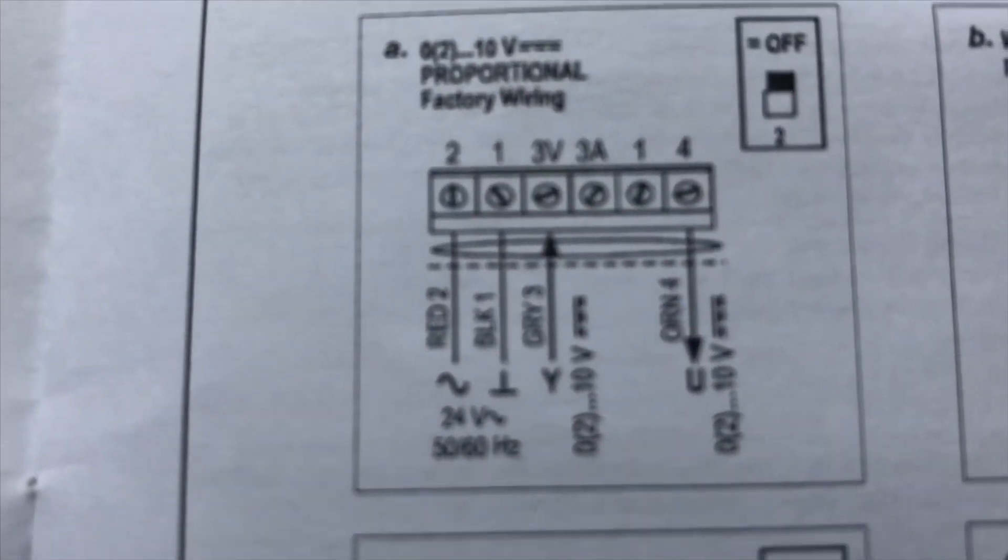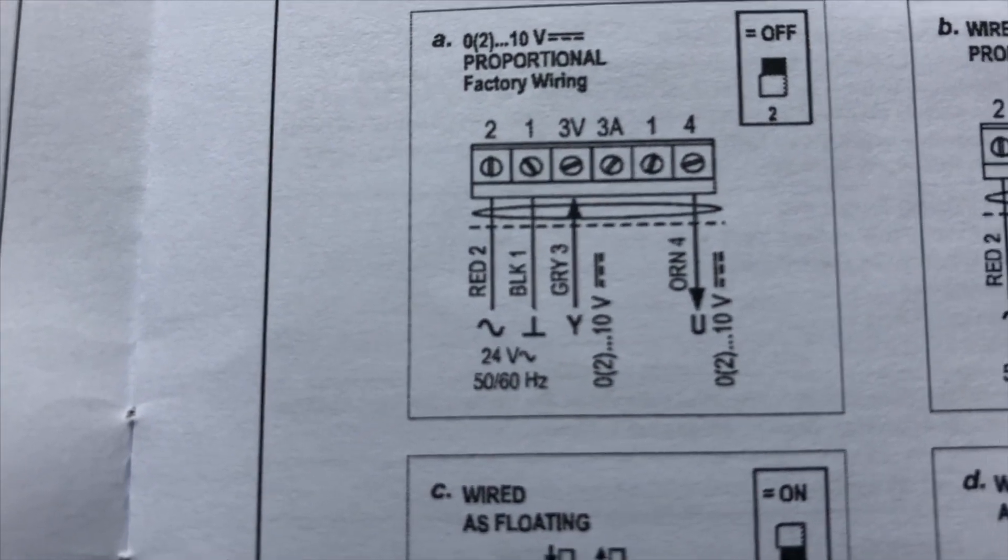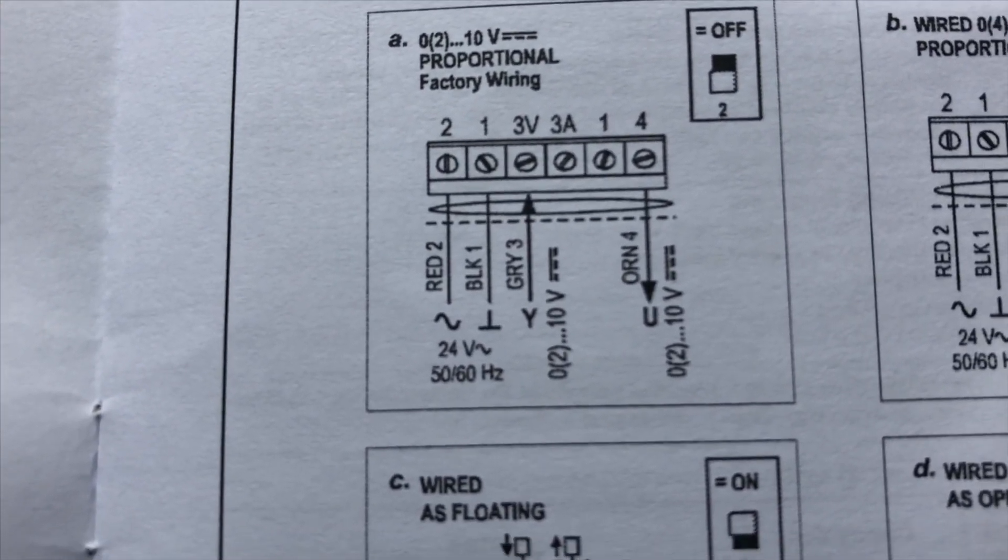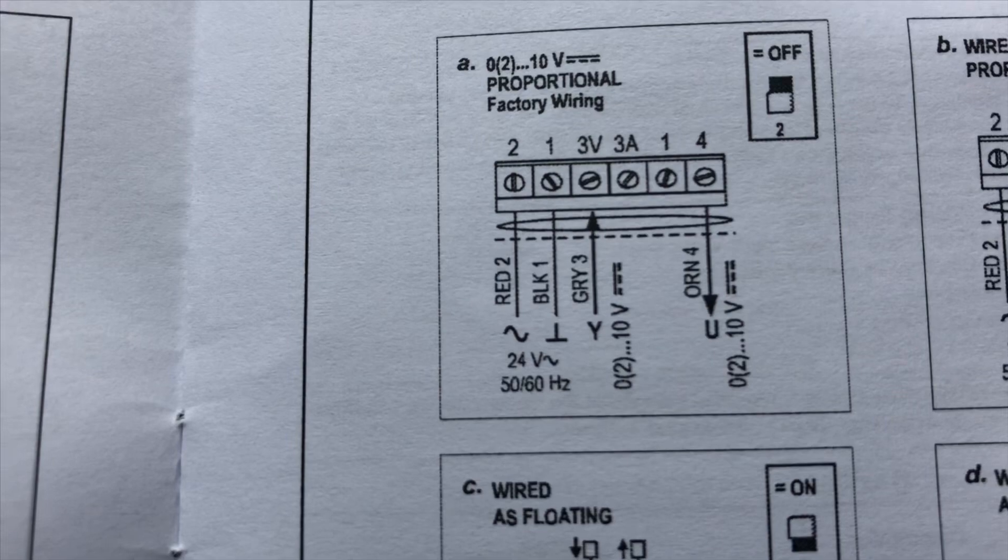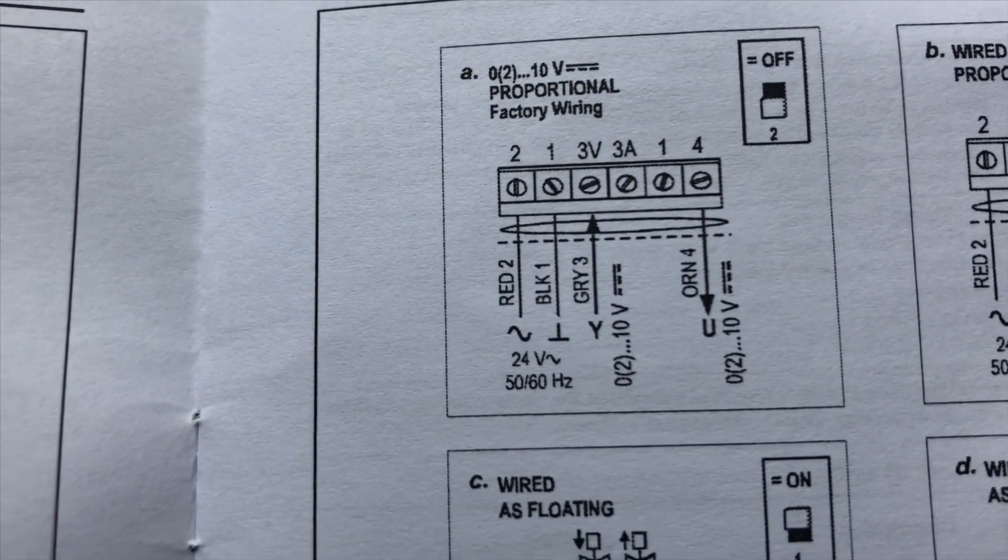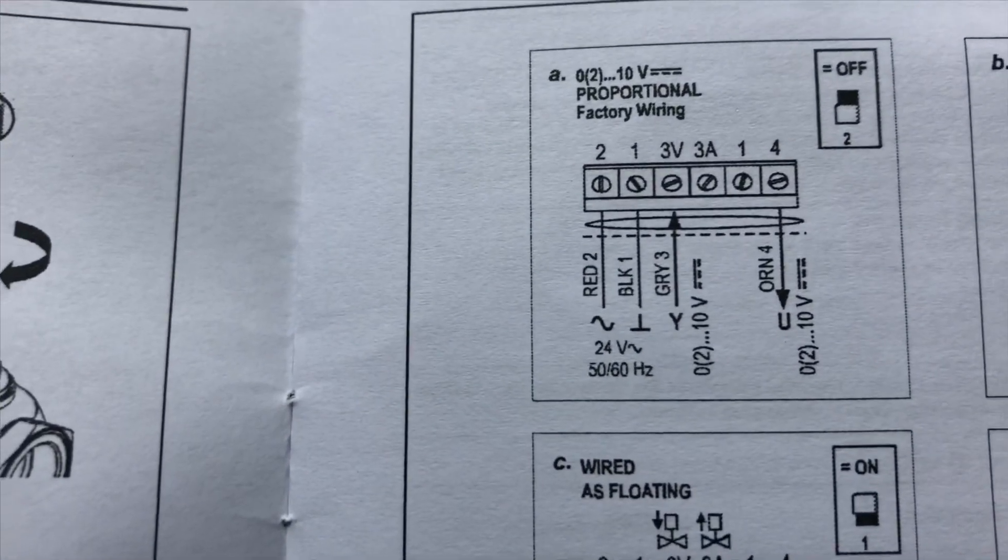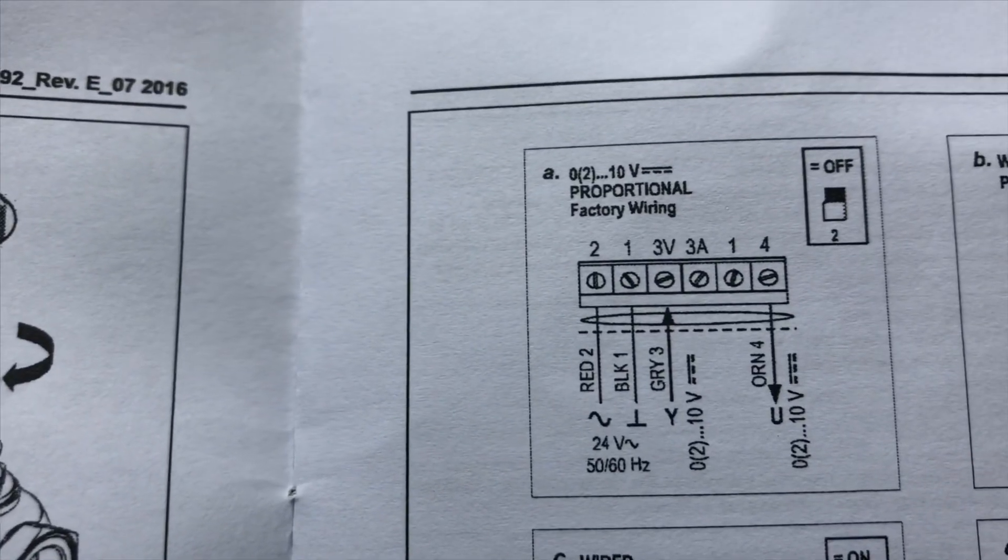Using the existing ArmorFlex, we're using our factory wiring, how the actuator is wired from the factory. Our red wire for our new actuator is our 24 volt. Our black is our ground or common. And our gray is going to be our 0-10 VDC wiring, which is our control wire.